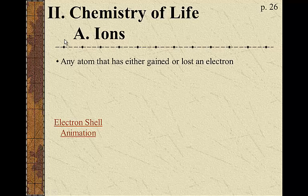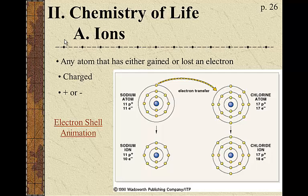First off, ions. Ions are any atom that has either gained or lost an electron. That then makes it a charged atom. So an ion is a charged atom with either a plus or a minus charge.